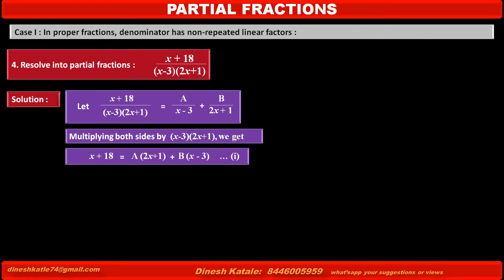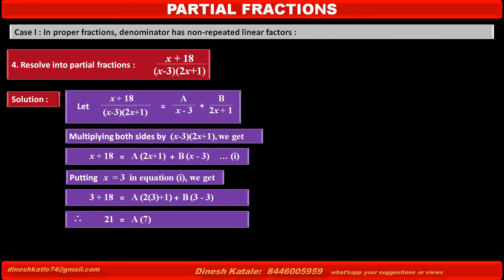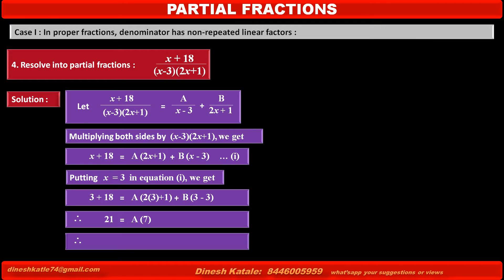Now we have to find the values of A and B. To find A, we eliminate the B term by putting x = 3 in equation 1. The left-hand side becomes 3 + 18 = 21. On the right-hand side, the first term becomes A(2×3 + 1) = 7A, and the B term becomes 0. Therefore solving, A = 3.